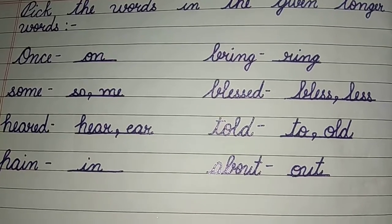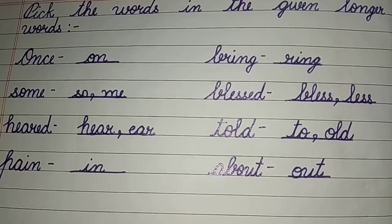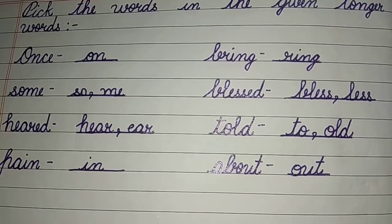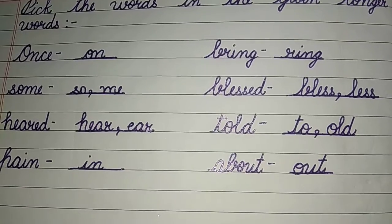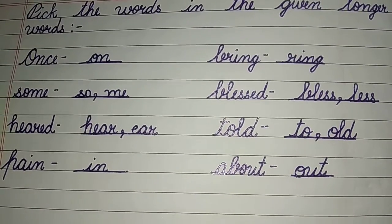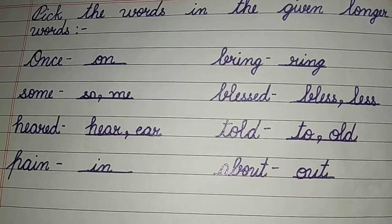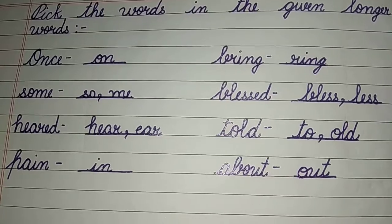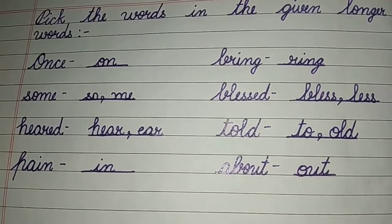Next, in 'told' the short words are 'to' (T-O) and 'old' (O-L-D). In 'about' the short word is 'out'.